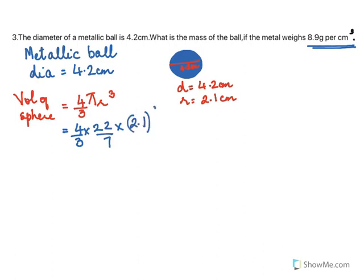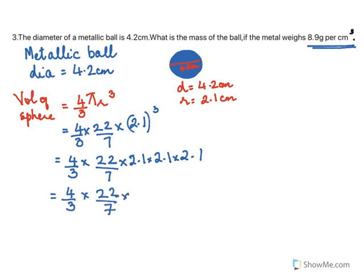2.1 cubed. You need to work this out. So you work this out, you will have to remove the decimals here. So the same way I'll just go over there. So 2.1 to remove, we have 2.1 and 2.1.